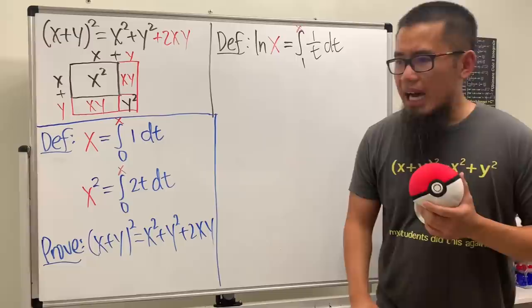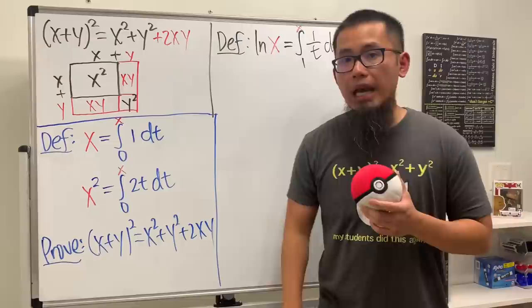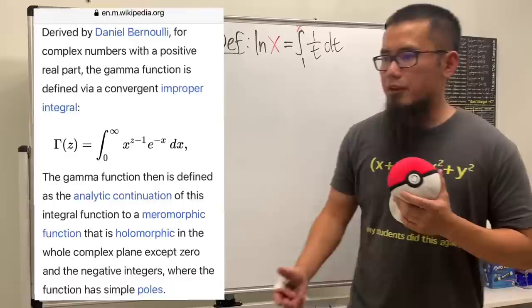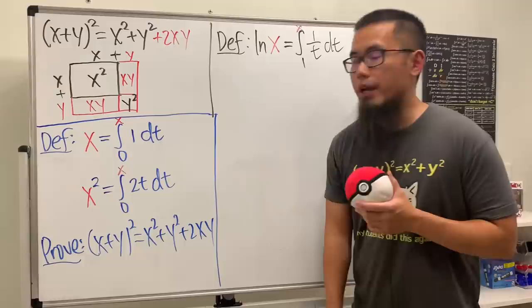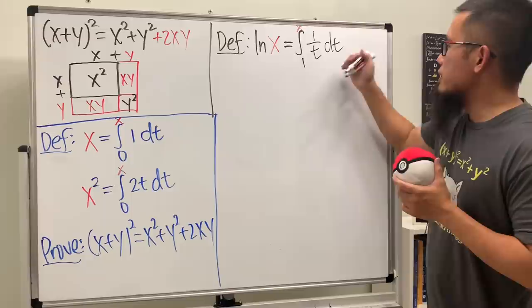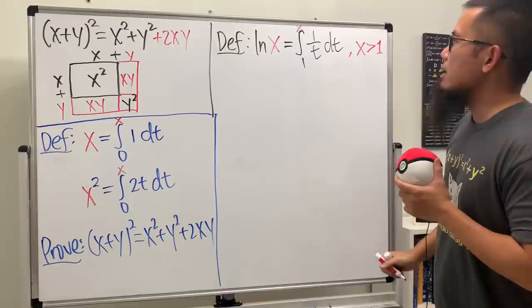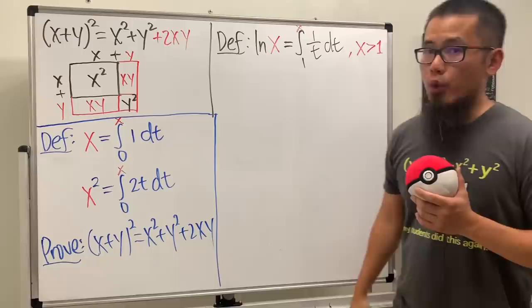Isn't ln x just the inverse of e to the x? Yeah, you can take that as a definition, but historically speaking, we do define ln x in terms of integral. And in fact, there are a lot more other functions, such as the error function, such as the gamma function. They are all defined in terms of an integral, right? And for simplicity purpose, I'm just going to focus on x is greater than 1. Even though, of course, we can have like 1 half in terms of the natural log, but let's say x is greater than 1 right here.